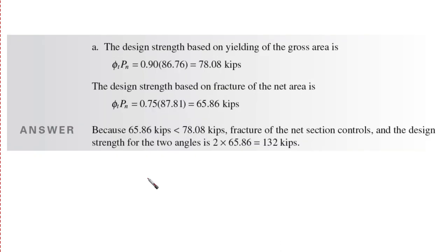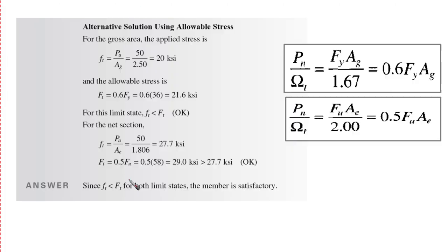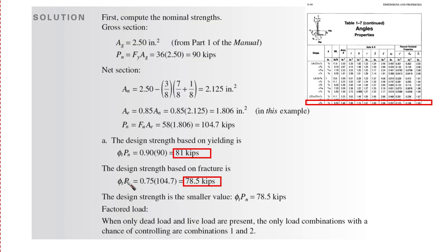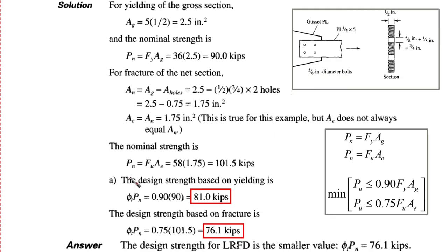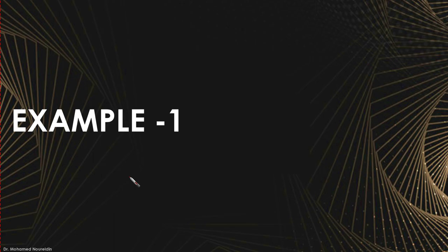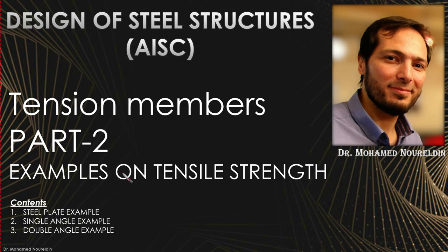This concludes today's video. I've gone through three different examples showing how to calculate the tensile strength of tension members — a steel plate, a single angle, and a double angle — for both LRFD and ASD. I hope you found it beneficial. Thank you, and see you in the next video.